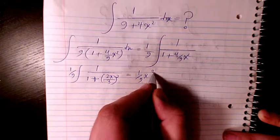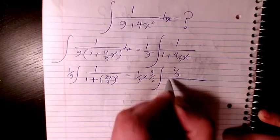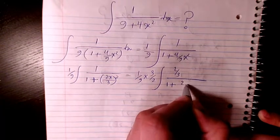2 over 3 here, 1 plus 2 over 3 x squared dx.